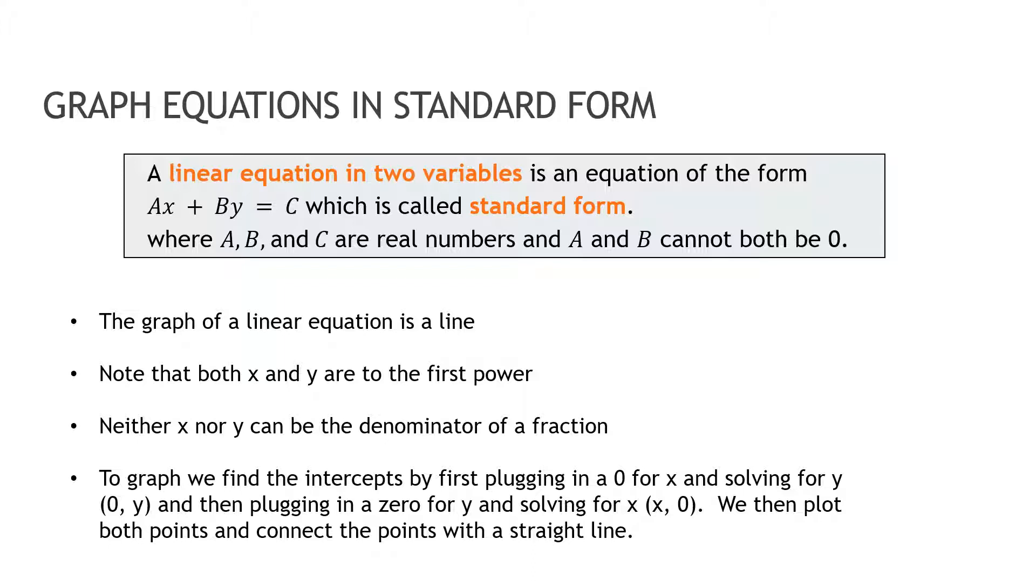So a linear equation in two variables, meaning there's an x and a y, written in this form Ax plus By equals C, which means the x and the y are on the same side. They're typically whole numbers, they're always real numbers, but both A and B cannot be zero, and when I graph it, it should be linear, which means it makes a line.